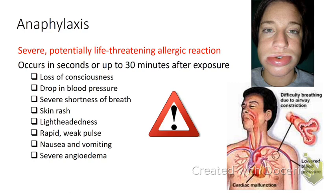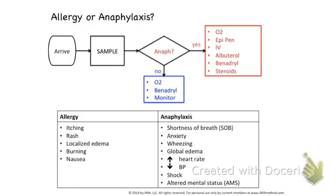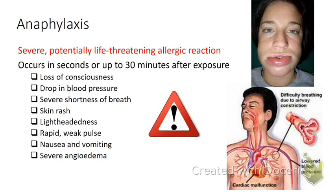Anaphylaxis is the most acute hypersensitivity reaction. You are super sensitive to the point that you could lose consciousness, severely drop your blood pressure, get short of breath, get a skin rash, get lightheaded. Basically, you pass out and die from anaphylaxis. We want to avoid it, but sometimes we don't know you're allergic to something until we give it to you. Why do you lose consciousness? Your blood pressure drops to the point where you're not getting blood flow to your brain.